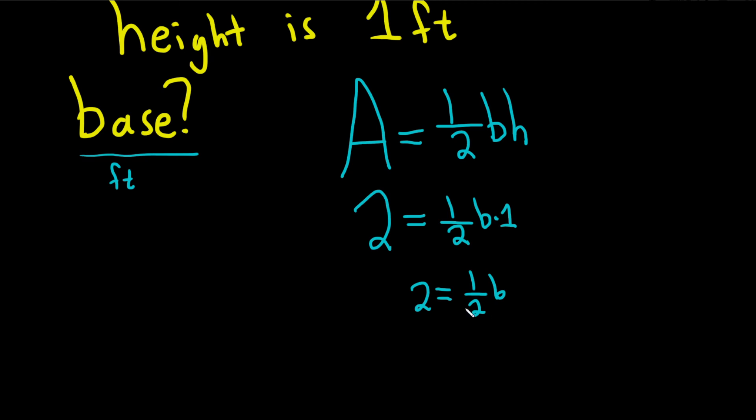And then to solve for B, we just have to get rid of the fraction. So we can multiply by 2, multiply by 2, these cancel, and so you get 4 equals B.